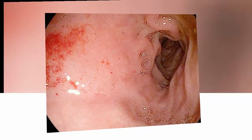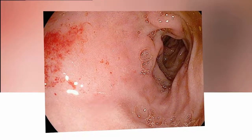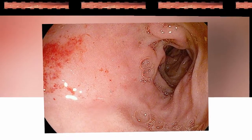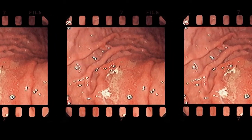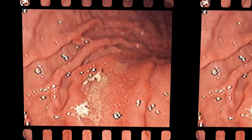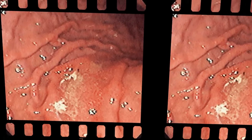Gastritis is an inflammation, irritation, or erosion of the lining of the stomach. It can occur suddenly, which is acute, or gradually, which is chronic. What causes gastritis?